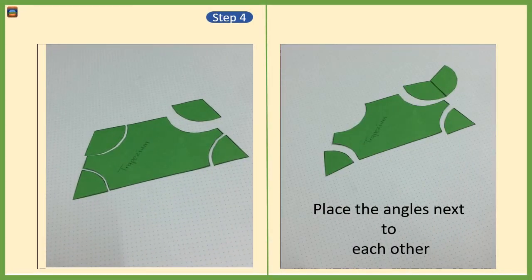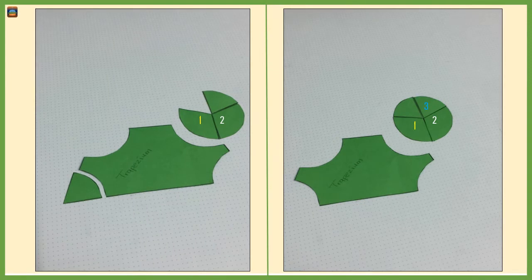Step number four: align the straight edges of any of the two cutouts from the trapezium, then add the third one and the fourth one. We now have a beautiful circle.